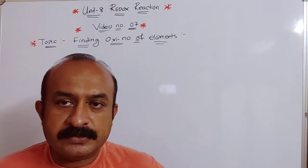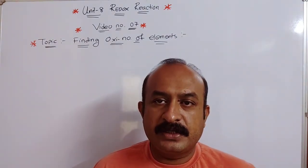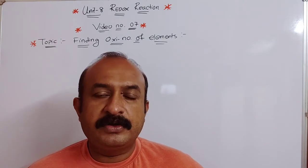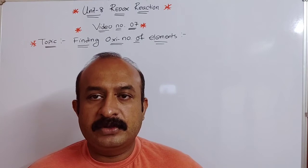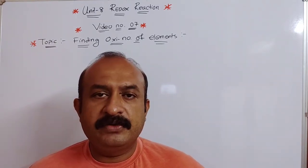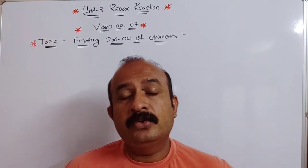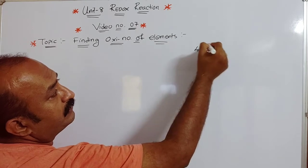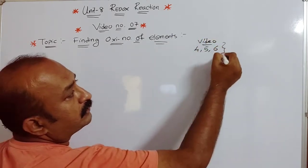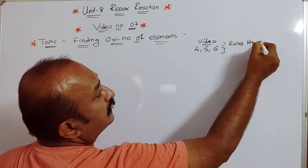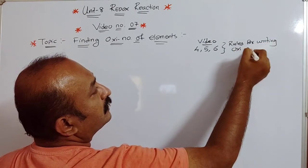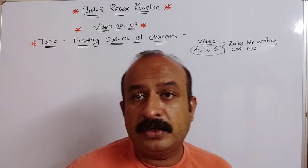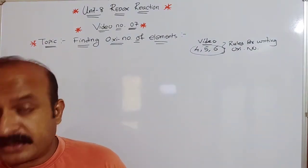Good morning students, this is Joy Varghis from Uncovering Chemistry. Today in Unit 8 Redox Reactions, video number 7, we are going to discuss how to find the oxidation number of a given element — metal or non-metal. To understand this, you must first go through videos 4, 5, and 6, which cover the rules for writing oxidation numbers. Without those three videos, you will not understand anything here.